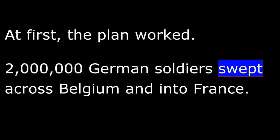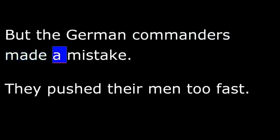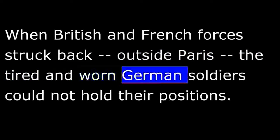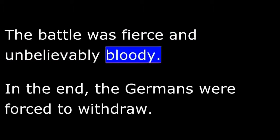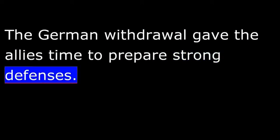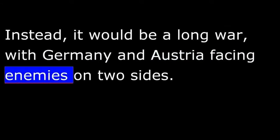At first, the plan worked. Two million German soldiers swept across Belgium and into France, rushing toward Paris hoping for a fast victory. But the German commanders made a mistake — they pushed their men too fast. When British and French forces struck back outside Paris, the tired German soldiers could not hold their positions. The battle was fierce and unbelievably bloody. In the end, the Germans were forced to withdraw, giving the Allies time to prepare strong defenses. There was no chance now for a quick German victory; instead, it would be a long war, with Germany and Austria facing enemies on two sides.